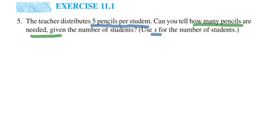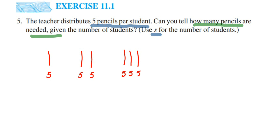Suppose there's one student — that student will get five pencils. If there are two students, they will get five and five. If there are three students, they will get five each: five, five, and five. And suppose there are four students — each will get five pencils: five, five, five, and five.